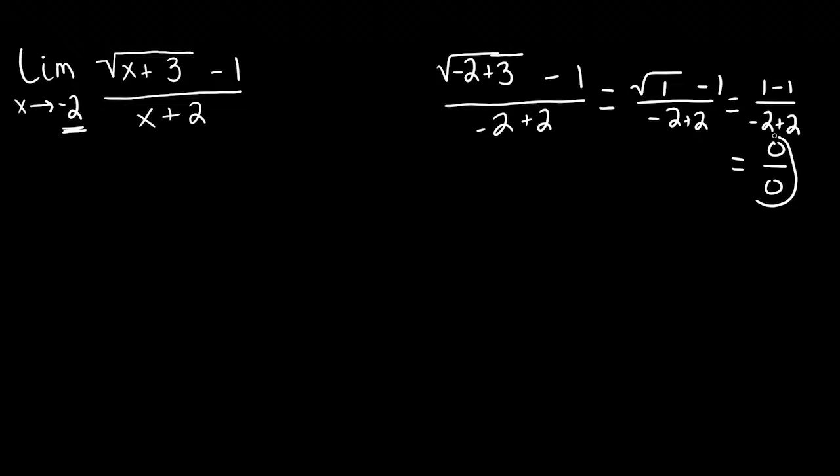We see that we get 0 over 0, which is one of our indeterminate forms. Once we reach an indeterminate form, we need to go back and look at our function again to see if there's something that we can manipulate about it to make our limit become more apparent and not appear as an indeterminate form.